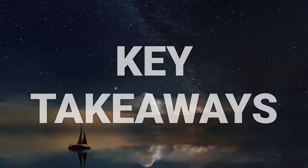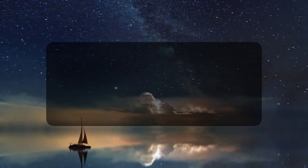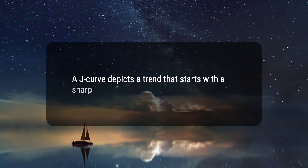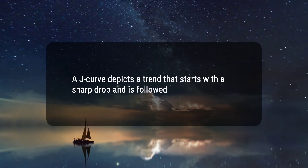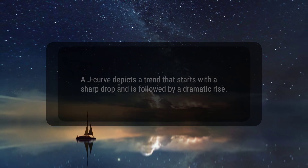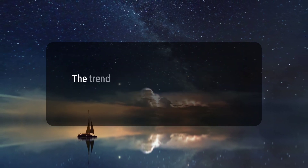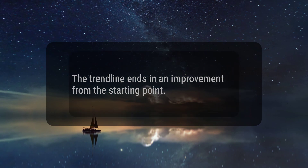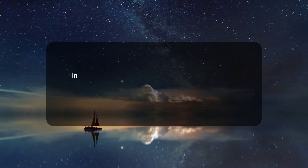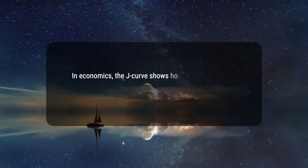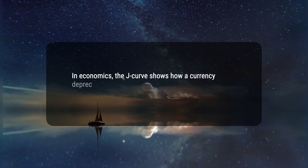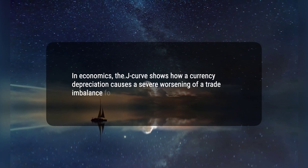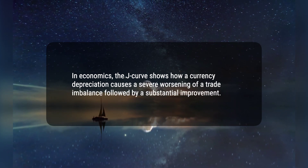Here are three key takeaways. One, a J-curve depicts a trend that starts with a sharp drop and is followed by a dramatic rise. Two, the trend line ends in an improvement from the starting point. Three, in economics, the J-curve shows how a currency depreciation causes a severe worsening of a trade imbalance followed by a substantial improvement.